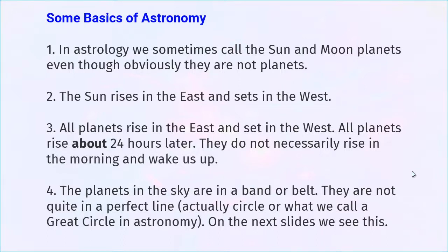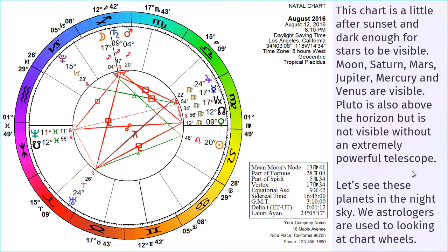Here is a chart done for August 12, 2016 at 8:10 p.m. in Los Angeles, California. Notice the sun is in the sixth house, meaning it's below the horizon — the sun had just set. Venus is a little above the horizon, probably enough that we could see it. Mercury, Jupiter, Mars, and Saturn are higher in the sky, along with the moon. Pluto is up there too, but of course you cannot see Pluto — it's too small to see with the naked eye.